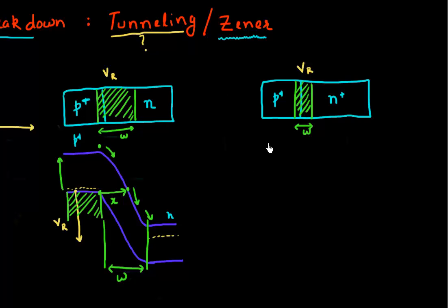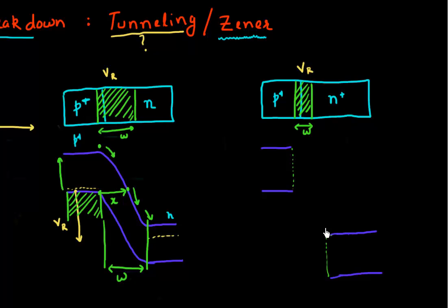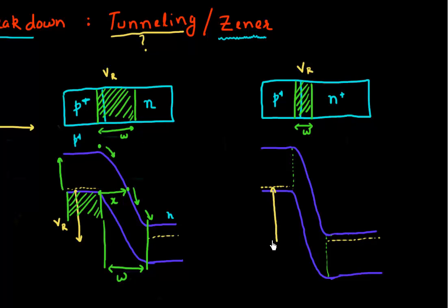So let me again draw the band diagram to show how it would look. I have my p-plus region and then I have my n region, which is also now heavily doped — so I have an n-plus region. These are the boundaries of my depletion region. I have a much narrower depletion region now. I connect the conduction band on the p-side to the conduction band on the n-side, and the valence band on the p-side to the valence band on the n-side. I draw the quasi-Fermi levels — one for the p-side and one for this heavily doped n-side — and again, I'm applying the same voltage, all of which drops across this depletion region.